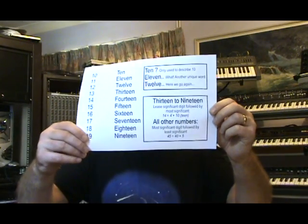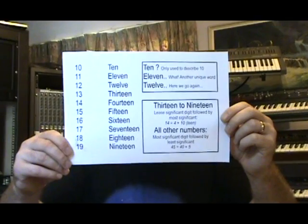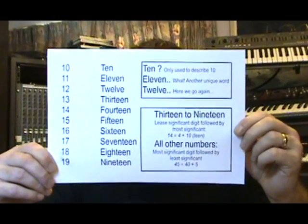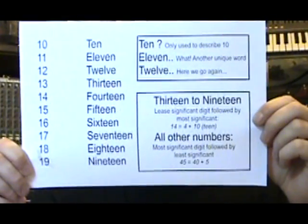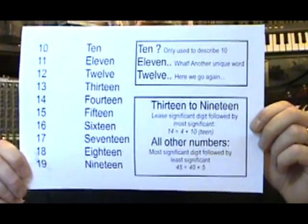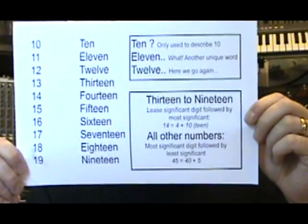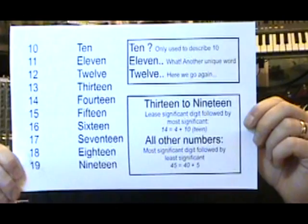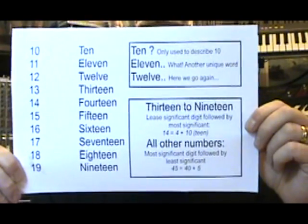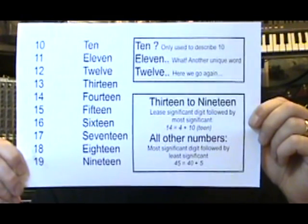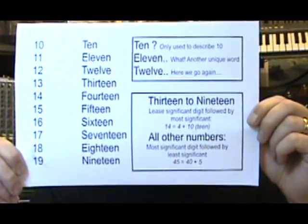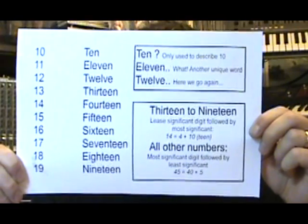If we look at the numbers between 10 and 20, we have 10, 11, and 12, which are all kind of unique words to describe a number. Then 13 to 19 we've got a problem as well, because all these numbers use the least significant digit first followed by the most significant digit. So 14 is saying 4 plus 10, whereas all other numbers use the most significant digit first, for instance 45 is 40 plus 5.